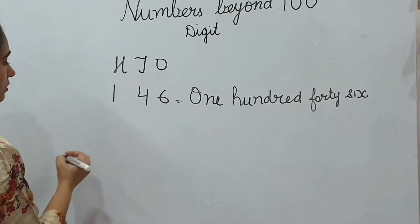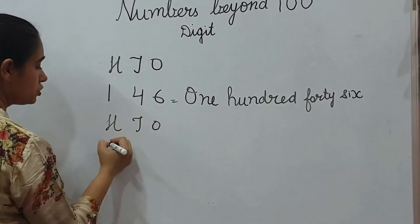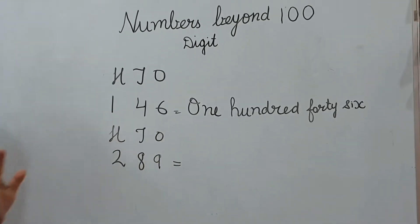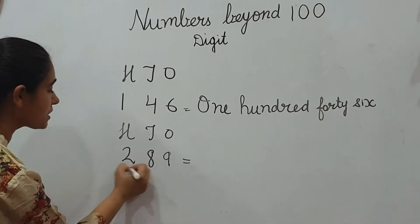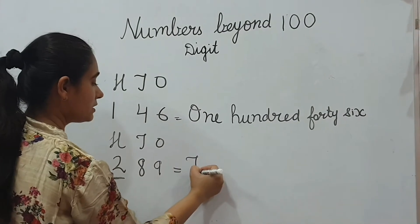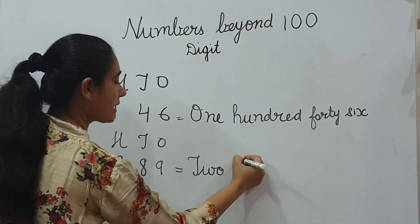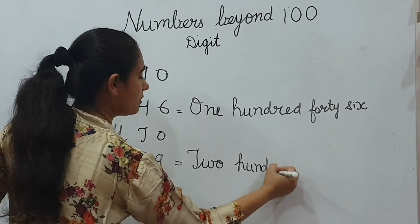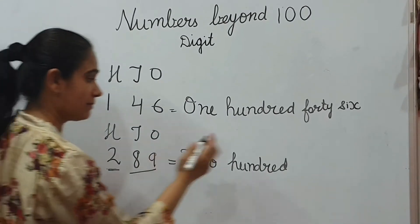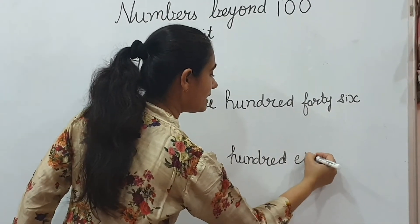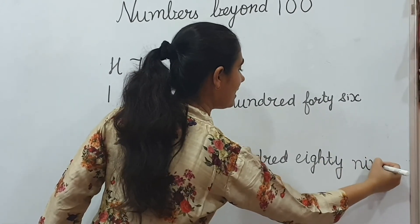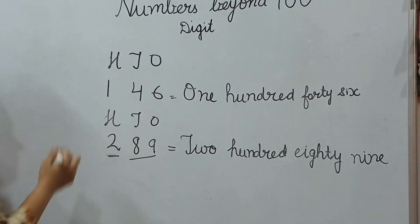146. Yes, the next one. Again, 289. You will not write 2-8-9. How we will write? 2 is at 100 place. How we will write this? 200. Capital T, everything will be small then. 200. How we will speak this? 89. You will write 80, E-I-G-H-T-Y, N-I-N-E.